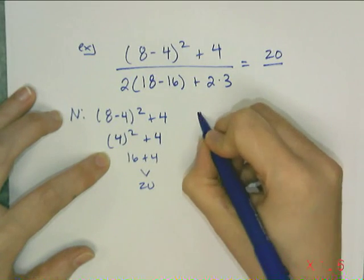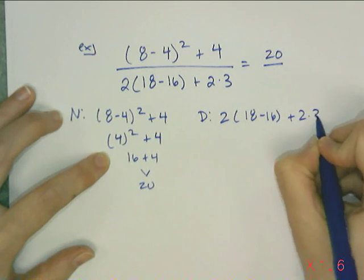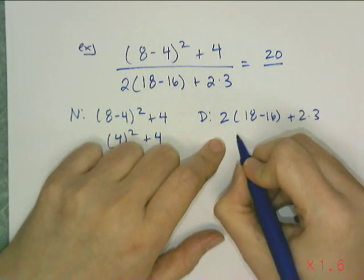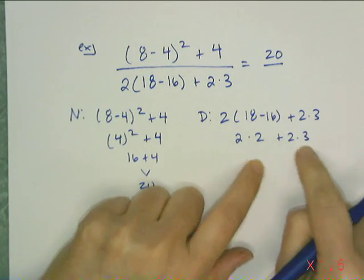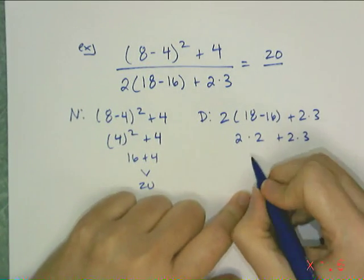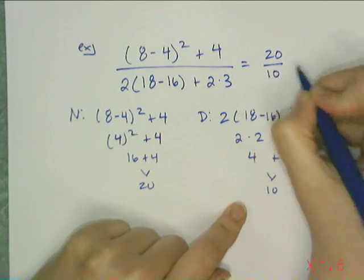Now I'm going to deal with the denominator. 2 times the quantity of 18 minus 16 plus 2 times 3. So 18 minus 16 is 2. So I have 2 times 2 plus 2 times 3. Since these are both multiplications, I can do them at the same time. 4 plus 6 gives me 10. I go back and I put this up here.